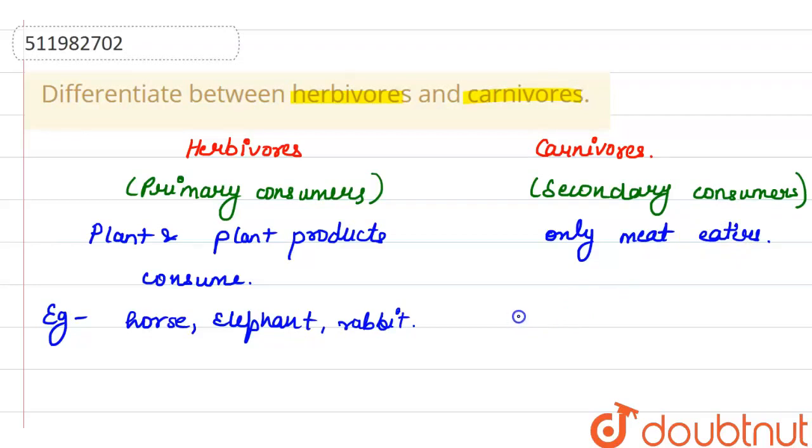What are our secondary consumers', or carnivores', examples? Lion and tiger. So they are carnivores and these are herbivores.